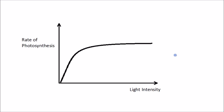The first factor we'll look at is light intensity. We can see from this graph how the rate of photosynthesis — on the y-axis — is affected by increasing light intensity on the x-axis, assuming all other factors are kept constant. In the beginning, as we increase light intensity, the rate also increases.